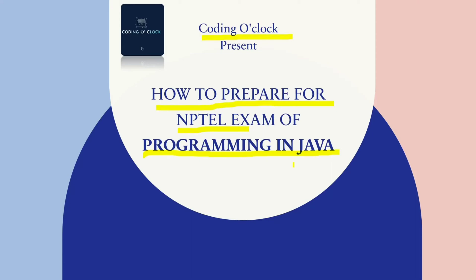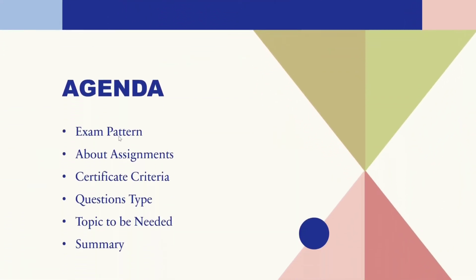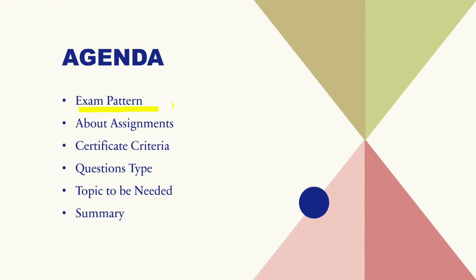Here are the main topics we'll be covering. Exam Pattern: understanding the format of the exam, including the number of questions, time duration, and marking scheme. About Assignments: knowing the importance of assignments and how to approach them to maximize your learning and preparation. Certificate Criteria: understanding the eligibility criteria for obtaining the NPTEL certificate and the minimum score required to pass the exam. Question Types: examining the different types of questions you can expect, including multiple choice, programming, and descriptive questions. Topics to be covered: identifying the most important topics, including data types, control statements, arrays, functions, classes, and more. Finally, a summary of key takeaways and final tips to help you succeed in the NPTEL exam of programming in Java.